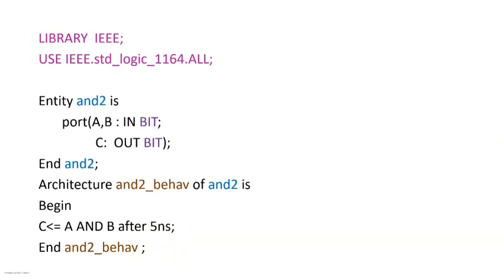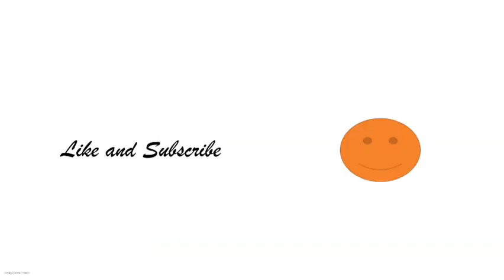Then you write 'end' followed by the architecture name. This completes the behavioral code for an AND gate. This is a two-input AND gate; if you want a three-input AND gate, in place of just A and B you can add another variable such as X, declared as bit as well, and write 'A and B and X'. You can make modifications like this for the behavioral modeling of AND gates with more inputs.